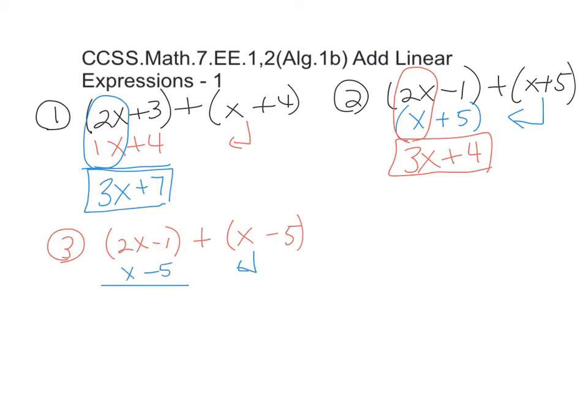Now, we're going to look at this. 2x plus an x is 3x. They're the same signs. Now, we have the same signs here. Negative 1 and negative 5.